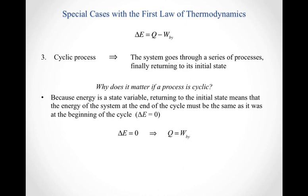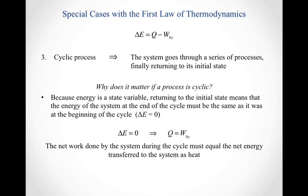If the energy doesn't change over the cycle, that means Q has to equal work done by the system. So the net work done by the system during the cycle must equal the net energy transferred to the system as heat. If the net energy transfer as heat over the cycle is positive — Q is positive — the work done by the system is positive, and you have what's known as an engine. An engine works because you deposit more energy into the system as heat than what is dumped out, and that gets converted into the engine doing work.